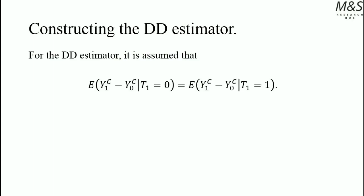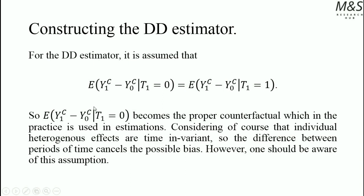The Difference-in-Difference estimator subtracts from that the expected value of the outcome of the control group in the post-intervention stage minus the outcome of the control group in the pre-intervention stage, when the treatment was given to them. It measures the expected outcome in post- and pre-intervention for the treated relative to the expected outcomes of the non-treated control group. Constructing the estimator, it is assumed that the control group serves as the proper counterfactual: the expected outcome of the control group in the post-intervention stage minus that in the pre-intervention stage, when the treatment wasn't given to them, equals the proper counterfactual. That is the basic assumption of the DiD estimator. Individual heterogeneous effects that are time-invariant cancel out through differencing, though one should be aware that the control group does not always match the proper counterfactual.